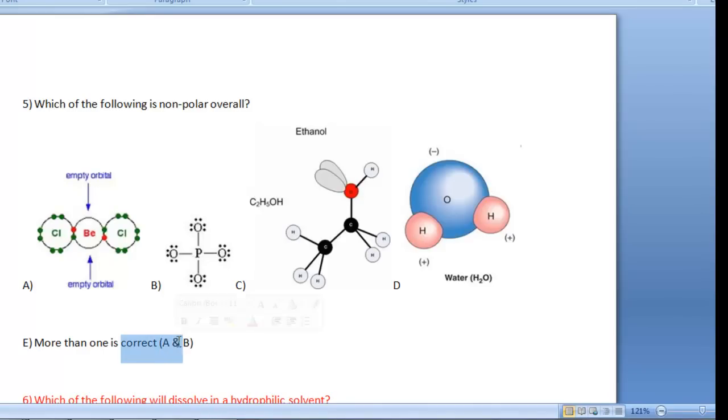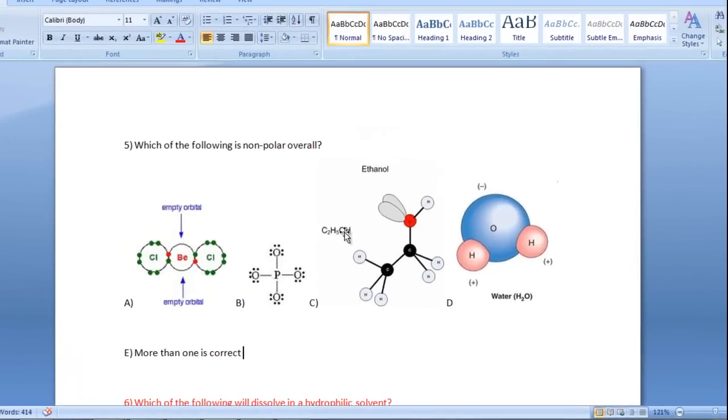So your best answer in this question based on A, B, C, D, the way they are, is more than one is correct. And that more than one that is correct is A and B are the correct answers. I hope that makes sense. If it doesn't, replay this video, post it on our forum, ask questions.